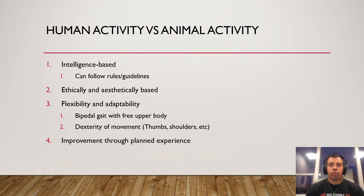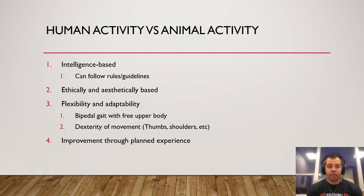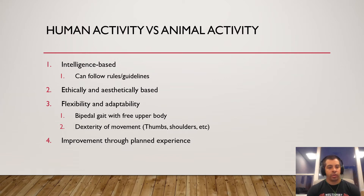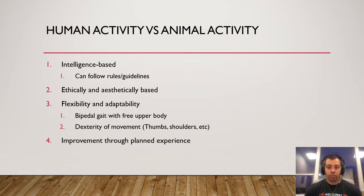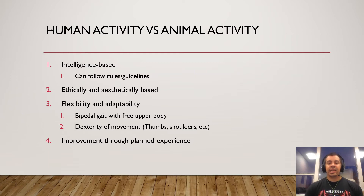Third, flexibility and adaptability — we are able to change certain things within a game, with this adaptability to improve. We also have this bipedal gait where our upper body can do things while our lower body does other things, giving us dexterity of movement. Fourth, improvement through planned experience — like studying film of another team before a game, so you have this planned experience where you can change your plan and improve.